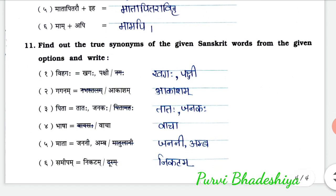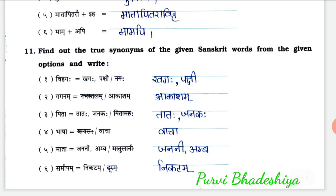Now exercise number 11: find out the true synonyms of the given Sanskrit words from the given options and write. 1st: Vihagah — synonym is Khagaha, Pakshi. 2nd: Gaganam — synonym is Akasham. 3rd: Peeta — synonym is Tataha, Janakah. 4th: Bhasha — synonym is Vacha. 5th: Mata — synonym is Chadani, Amba. 6th: Samipam — synonym is Nikatam.